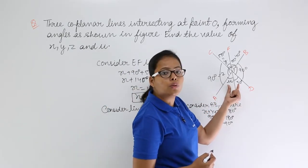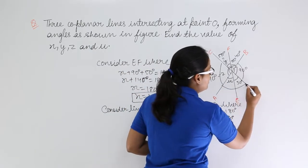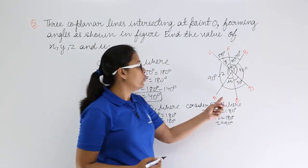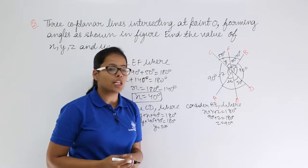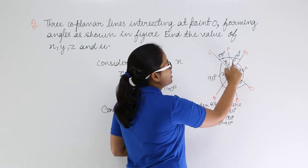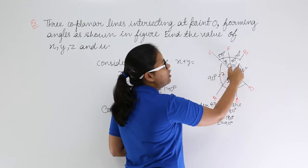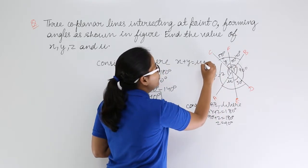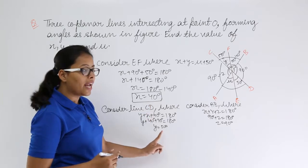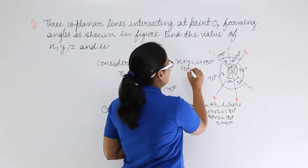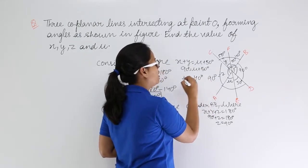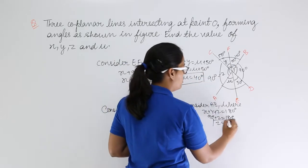Now we need to find u. Since lines CD and AB intersect, their vertically opposite angles are equal. The angle formed by u + 50 is opposite to the angle formed by x + y. So: u + 50 = x + y = 40 + 50 = 90 degrees. Therefore u = 90 − 50 = 40 degrees.